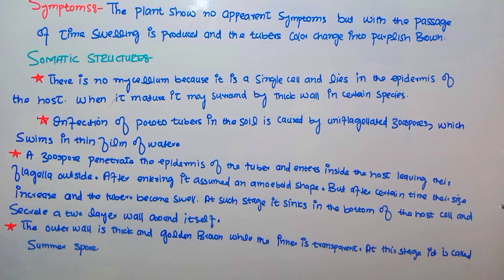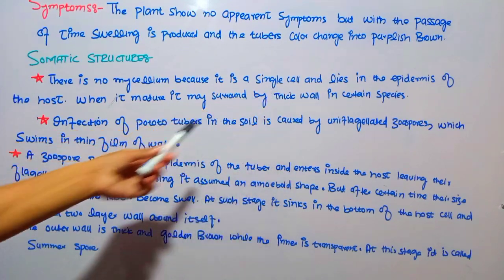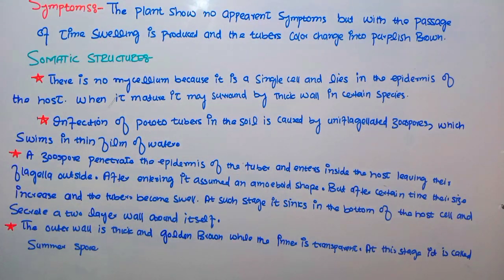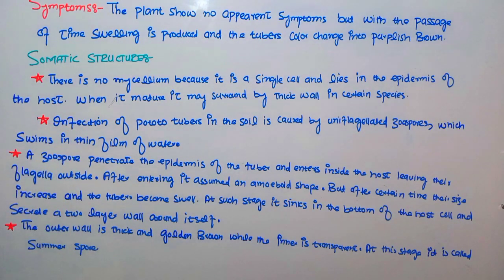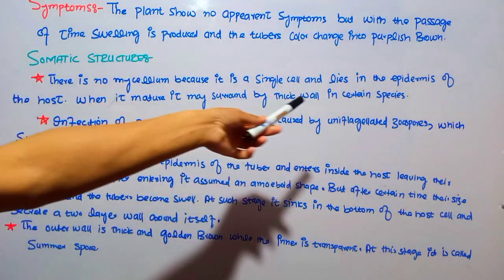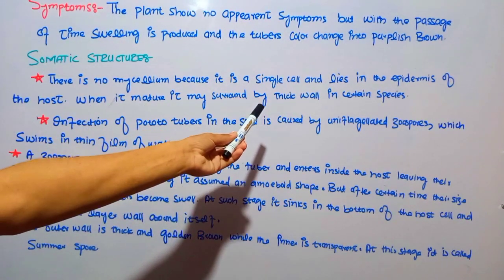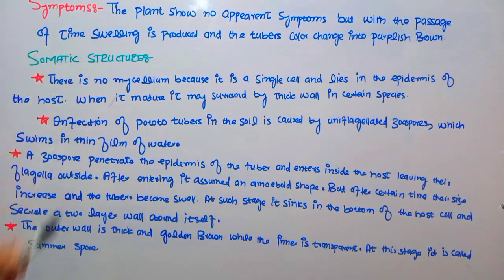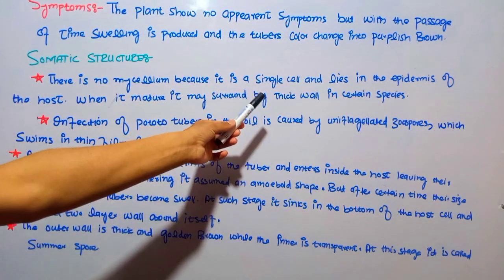As for the somatic structure: there is no mycelium because Synchytrium endobioticum is a single cell and lies in the epidermis of the host. Mycelium is a collection of many hyphae, but since only a single cell is present in the epidermis, there is no mycelium. When it matures, it may be surrounded by a thick wall in certain species.